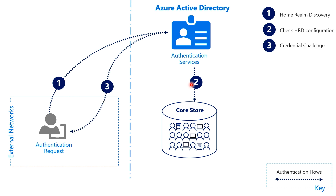So in step three, the authentication service renders the username and password in an HTML form in Kim's browser. Kim types in the same Active Directory password and submits the form back to Azure AD. Now in step four, the authentication service takes the password that Kim typed in and applies the same hashing we discussed in the previous video. We take the password, derive the MD4 password hash, then apply the password key derivation function a thousand times using HMAC-SHA-256. If the computed value is the same as the one stored in the store, then the credential is valid and the authentication service continues the flow. In this case, it will generate a token for Salesforce and send Kim back to the application.